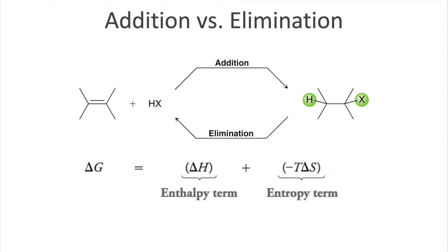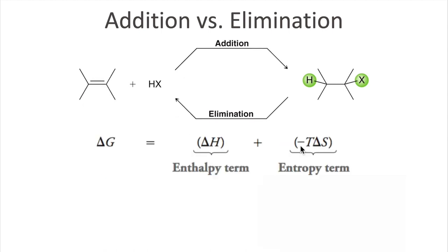Now let's consider the entropy term. Going from the reactant side to the product side, you go from two molecules to one molecule. One molecule has more order than two — two possibilities is more chaotic than one. So in the forward reaction, there is a decrease in disorder, meaning the ΔS term is also decreasing — that is a negative sign. Note that entropy is multiplied by a negative T, so the negative sign times the negative entropy makes that term positive, counteracting the negative enthalpy.